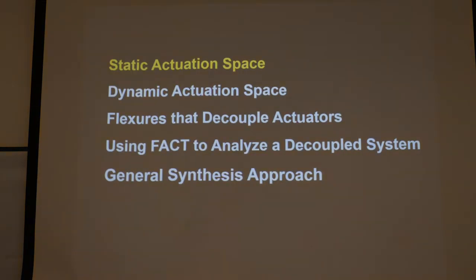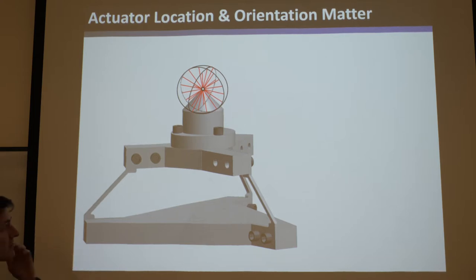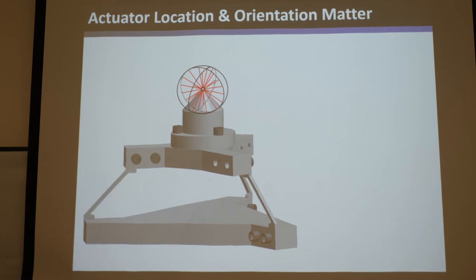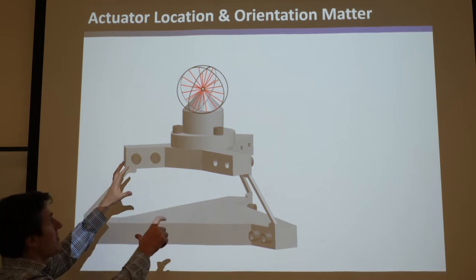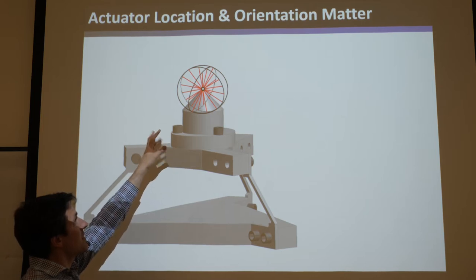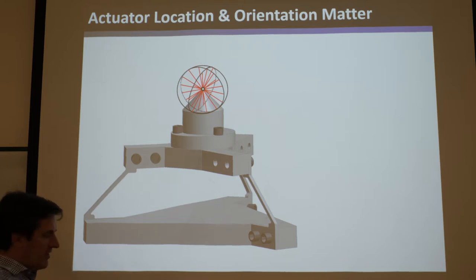Let's look at static actuation space. You remember this flexure — it's a parallel system. We designed it to achieve a certain freedom space. We assumed ideal constraints: infinitely stiff along their axis, infinitely compliant in the other directions. We used constraint space and laid out the flexures, giving us a topology that, if ideal, would not permit any relative motions outside the freedom space. Within that freedom space, any rotation could occur with no resistance — at least for the very first instant.